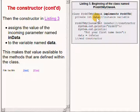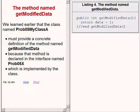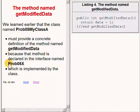As you will recall from an earlier discussion, that incoming value is a random value that was generated in the main method. We learned earlier that this class must provide a concrete definition of the method named getModifiedData, because that method is declared in the interface named prob05x, which is implemented by this class.